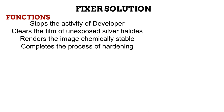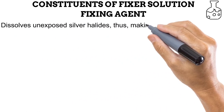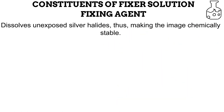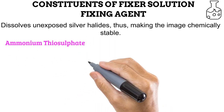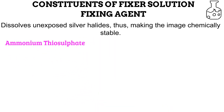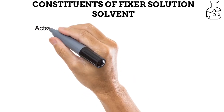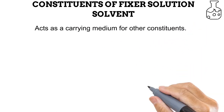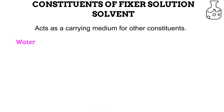Now let us look at all the constituents of the fixer solution. The first constituent is the fixing agent — the ingredient that performs the function of dissolving unexposed silver halide grains, thus rendering the image photographically and chemically stable. Ammonium thiosulfate is the fixing agent of choice. Next is the solvent. Just like in the developer solution, a solvent is needed to serve as a carrying medium for other constituents. Water is the solvent used in the fixer solution too.